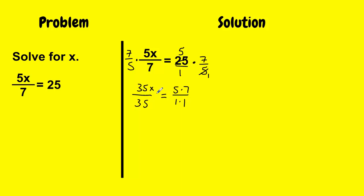And I'm going to simplify my next step, 35 over 35 is just 1x equals 35 over 1. And when I simplify it one more time, 1x, I would just write it out as x equals 35 divided by 1 is 35.